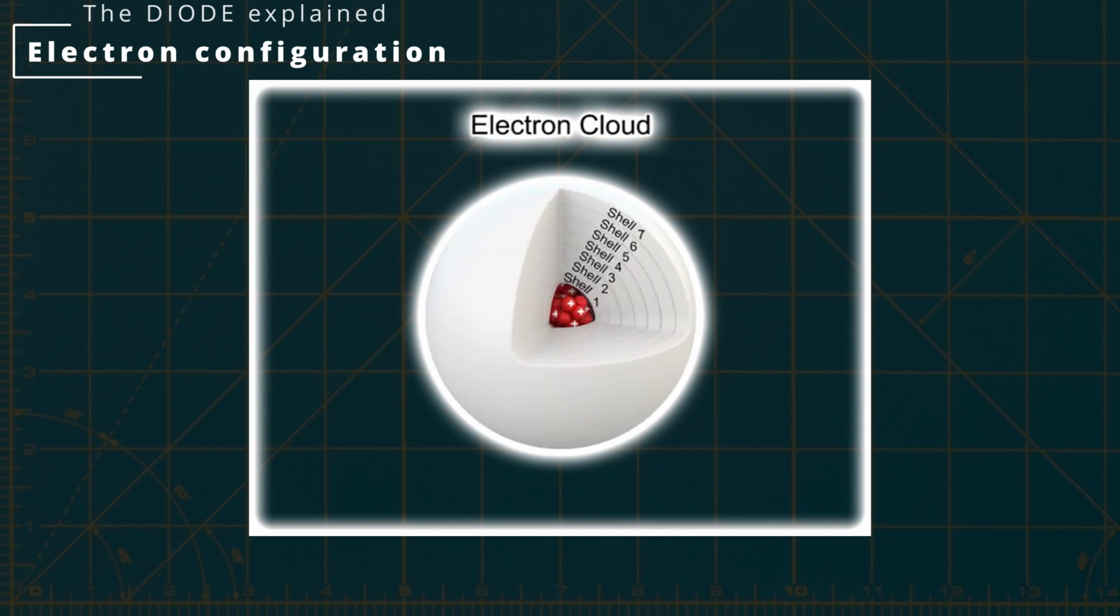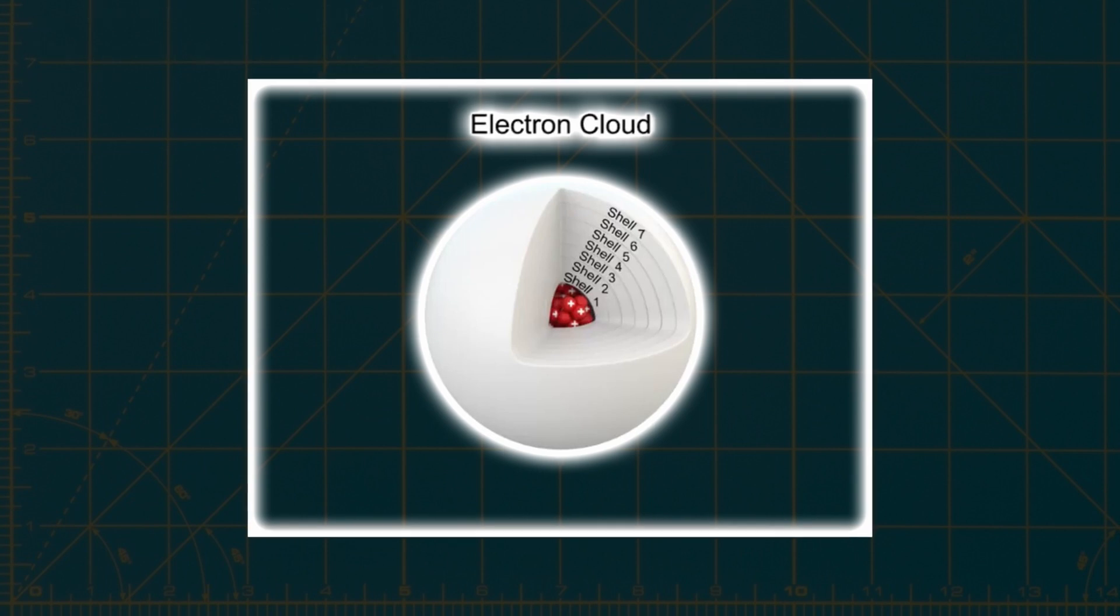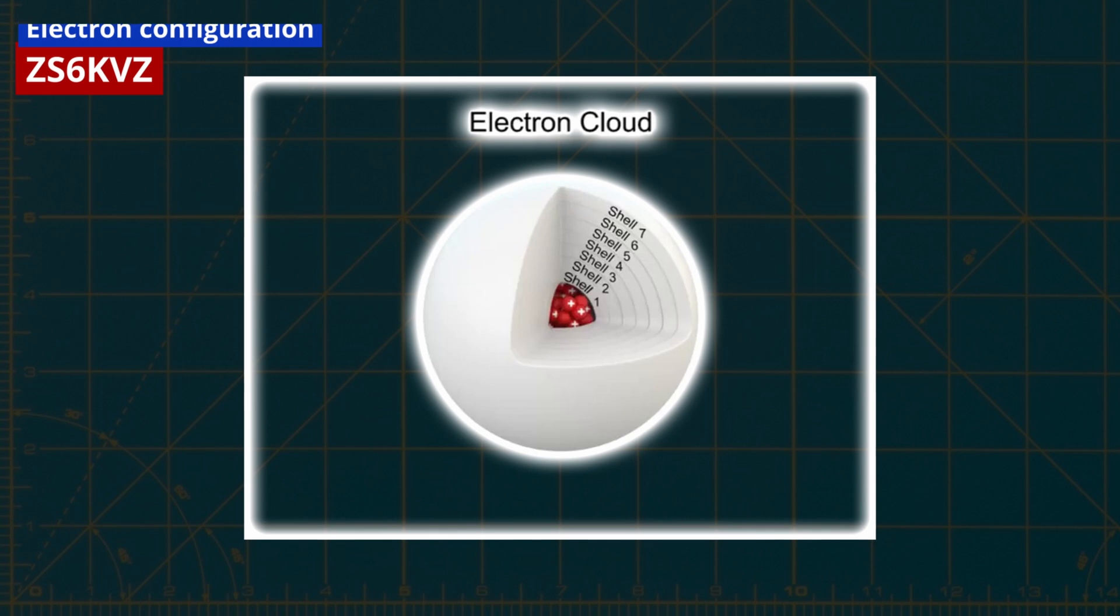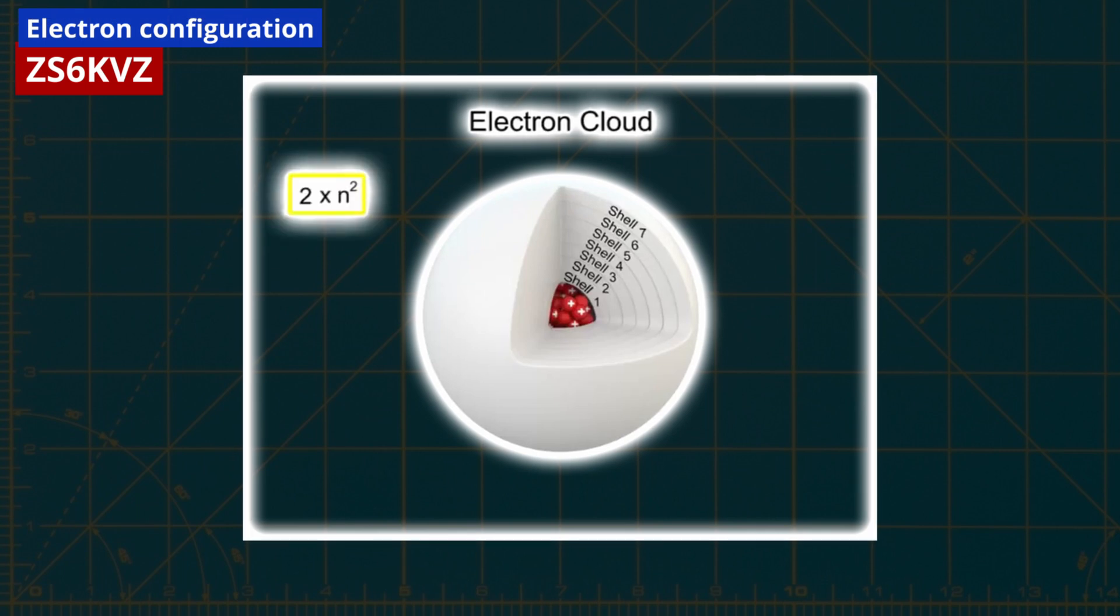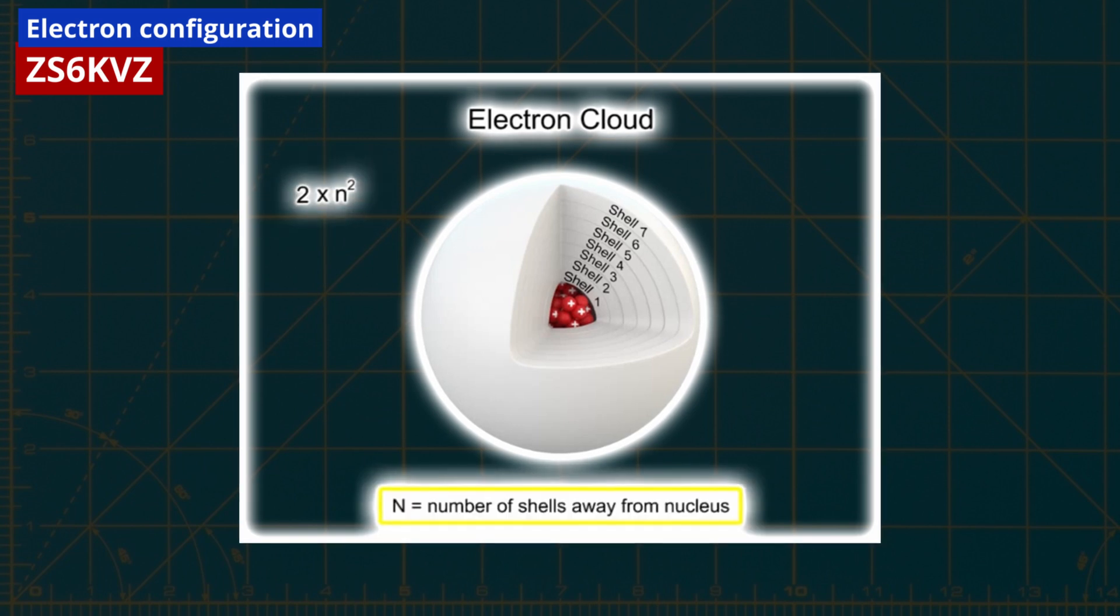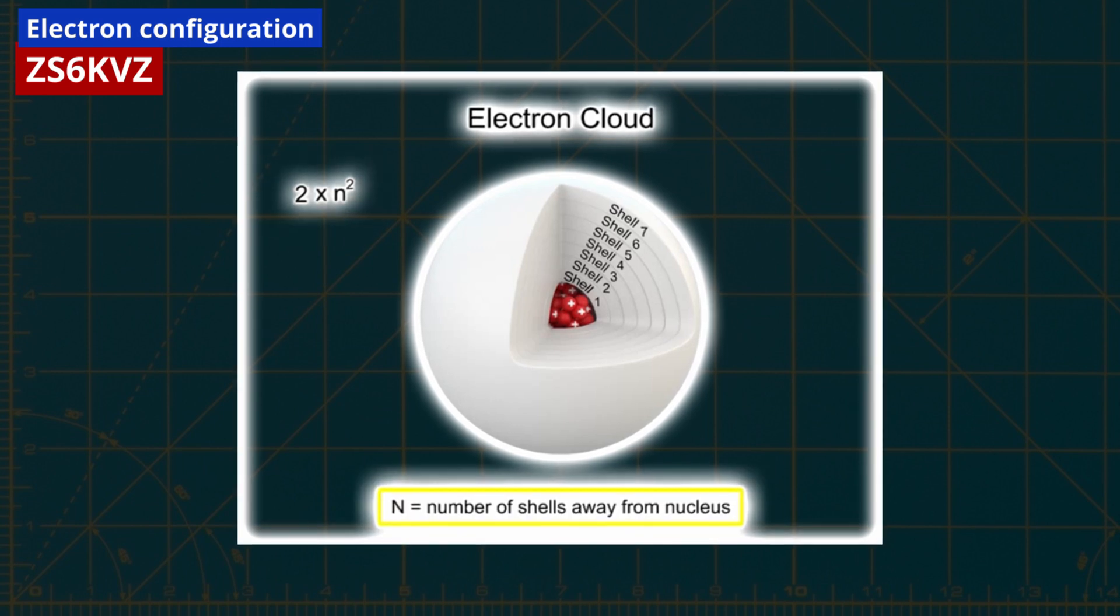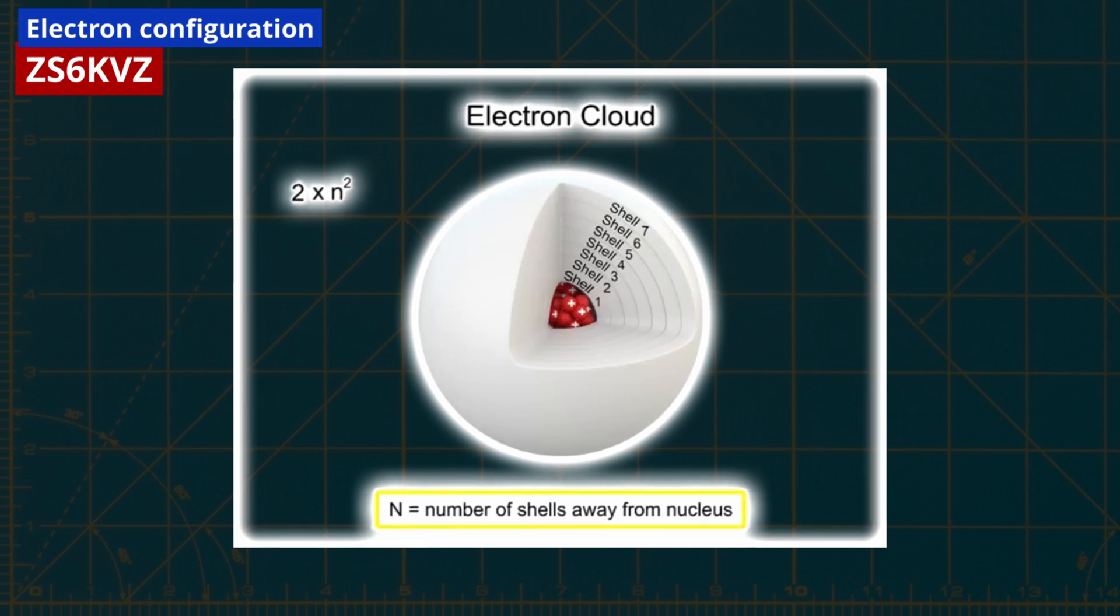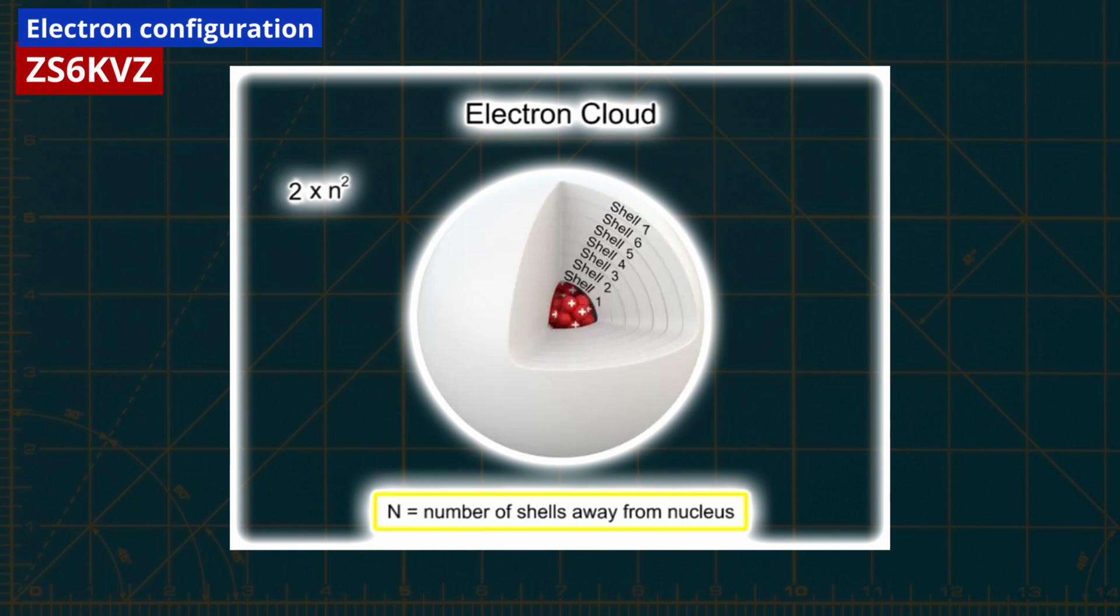Electrons are organized within the electron cloud based on the distance of their orbits from the nucleus. These orbital layers are also known as shells. Each shell has a specific electron capacity, determined by a rule in quantum mechanics. According to this rule, an orbit is filled when the number of electrons it holds is equal to 2 times n squared, where n represents the number of shells away from the nucleus being considered. This value is also referred to as the principal quantum number.